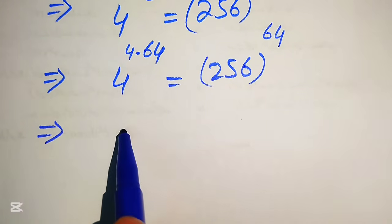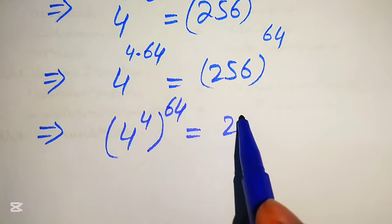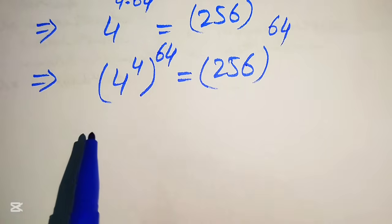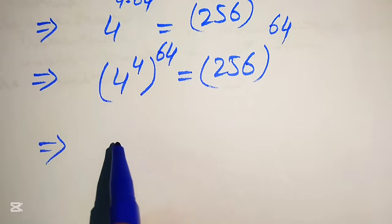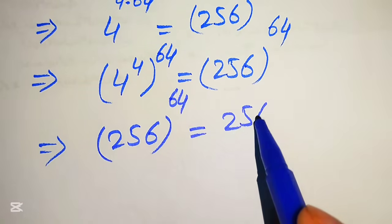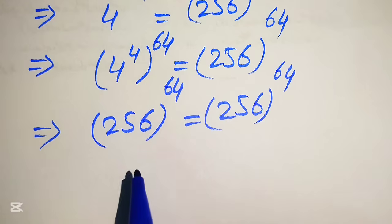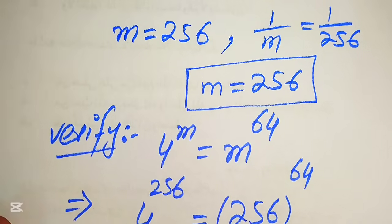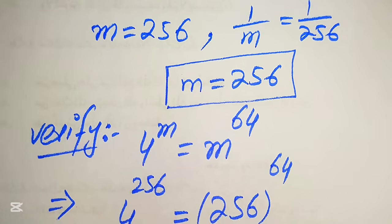Moving 4 inside the term gives (4^4)^64 equals 256^64. Since 4^4 = 256, both sides equal 256^64. Both sides have the same answer, confirming that m = 256 satisfies the original equation. That is the final answer. Thank you for watching — please subscribe to my channel for more videos.